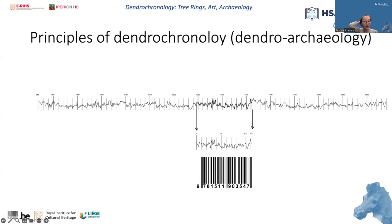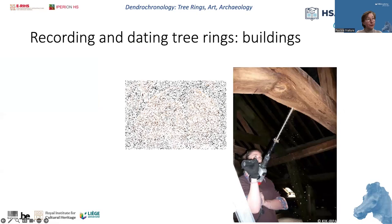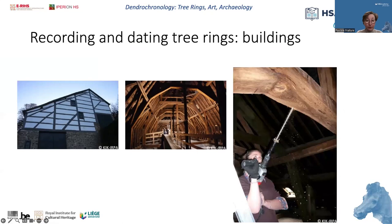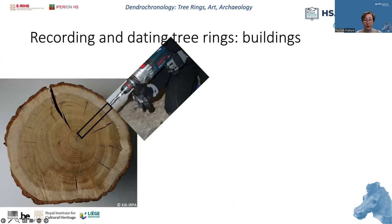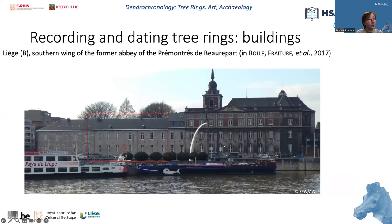Now we'll see through case studies how to interpret this dating, but first, how to sample cultural heritage objects. On deciduous trees, recording tree-ring widths requires access to the transverse section of the tree. From beams in buildings we use a borer to take a core, oriented from the periphery to the pith of the beam. Here is the resulting sample with the internal part of the tree and the external part near the bark. From this case study of a building in Liège, we will explore the dating results we can get in order to understand the chronology of the construction.